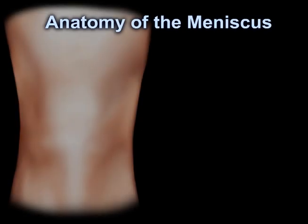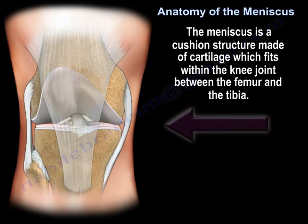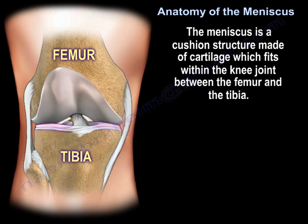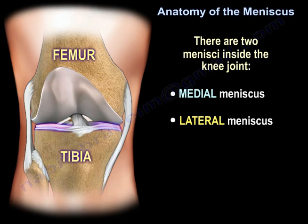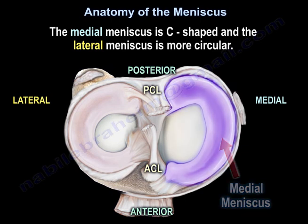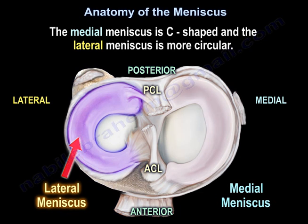The anatomy of the meniscus: the meniscus is a cushion structure made of cartilage which fits within the knee joint between the femur and the tibia. There are two menisci inside the knee joint — a medial meniscus and a lateral meniscus. The medial meniscus is C-shaped and the lateral meniscus is more circular.